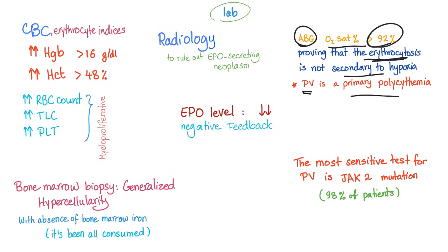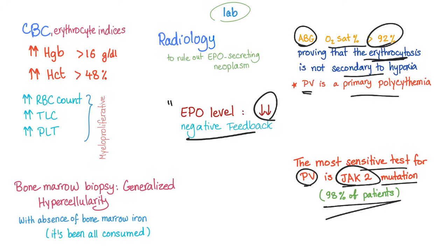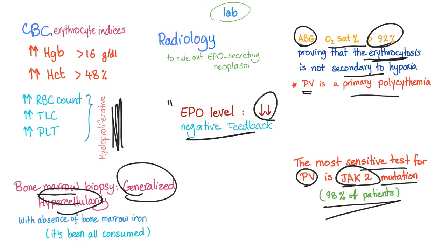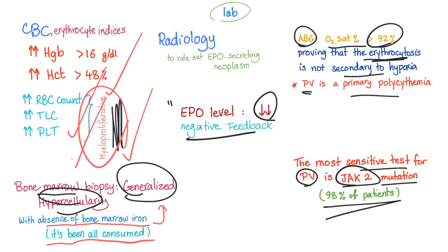Polycythemia vera is a primary polycythemia. EPO level in plasma is low due to negative feedback — if you have lots of red blood cells, why bother secreting EPO? The most sensitive test is JAK2 mutation — 98% of patients with PV have JAK2 mutation. Bone marrow biopsy shows generalized hypercellularity. There is also absence of bone marrow iron, because all iron has been consumed to form the excess blood cells — especially red blood cells — since iron is needed to form hemoglobin.